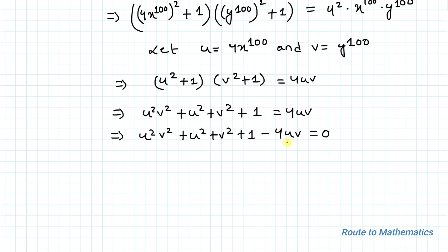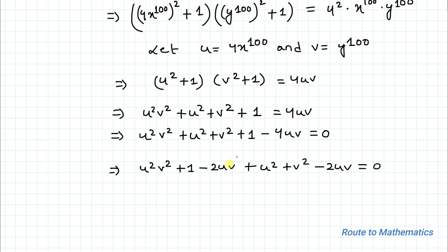In the next step we split −4uv as −2uv − 2uv, so we can write: u²v² − 2uv + 1 + u² + v² − 2uv = 0. Here we split −4uv into two parts of −2uv each.